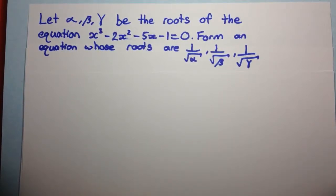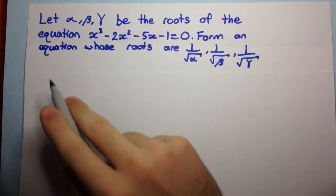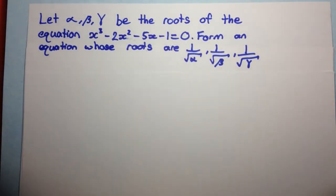Welcome to this video. Today we're going to be doing the 2009 Question 3C from the Hill's Grammar 4-Unit Trial. The question says: let alpha, beta, and gamma be the roots of the equation x cubed minus 2x squared minus 5x minus 1 equals 0.